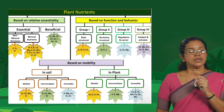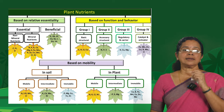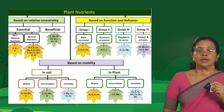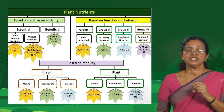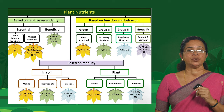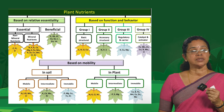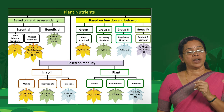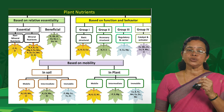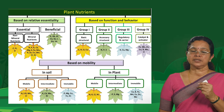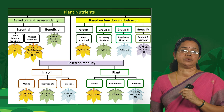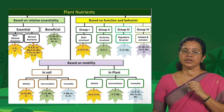If you look at a more detailed classification based on relative essentiality, there are essential nutrients and beneficial nutrients. Essential nutrients include the basic nutrients — also known as non-mineral nutrients — and the mineral nutrients we have already seen.